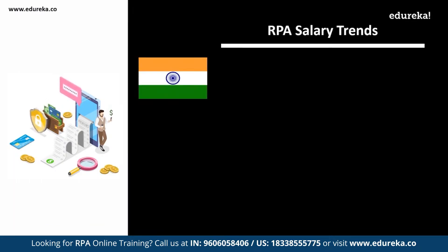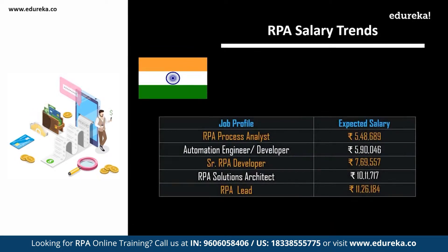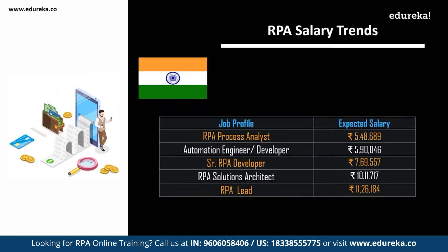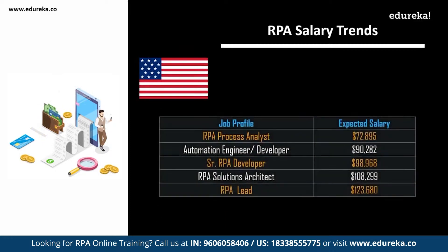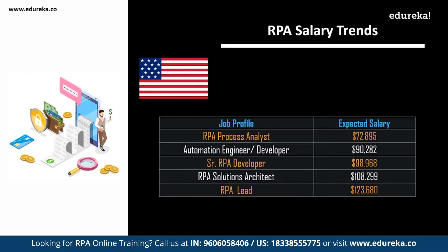In India, an RPA process analyst can expect around 548,000 per annum; an automation engineer or automation developer can expect 590,000; a senior RPA developer around 769,000; an RPA solutions architect around 1,011,000; and an RPA lead around 1,126,000. In the USA, an RPA process analyst can expect around 70,000 dollars; an automation engineer around 90,000 dollars; a senior RPA developer around 98,000 dollars; an RPA solutions architect around 100,000 dollars; and an RPA lead around 123,000 dollars.